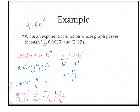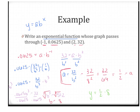Now that we have b, we go back and solve for a. Using a = 32/b², that's 32/8² = 32/64 = 1/2. So once we have a and b, we write the function: y = (1/2)·8^x. And there is our exponential function.